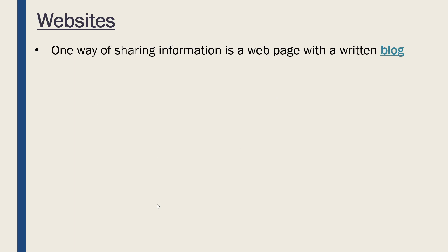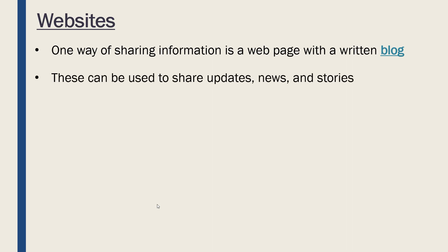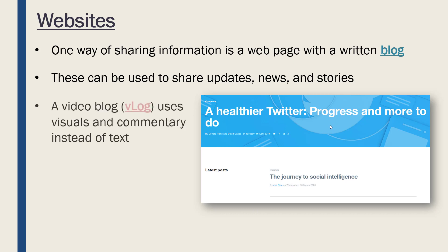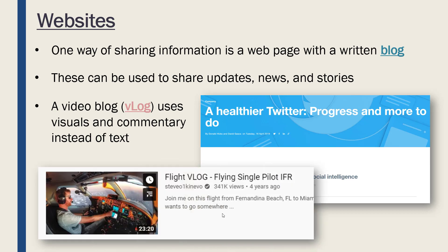On either an internal or internet site, one way you can share information is with a written blog — articles which can be used to share updates, news, and stories about your company. This is one from Twitter where employees are writing articles about things they're interested in and working on. You can also have vlogs — a video blog — where instead of text there is a video with audio commentary. You see loads of these on YouTube; here is one where a pilot is vlogging his journey.